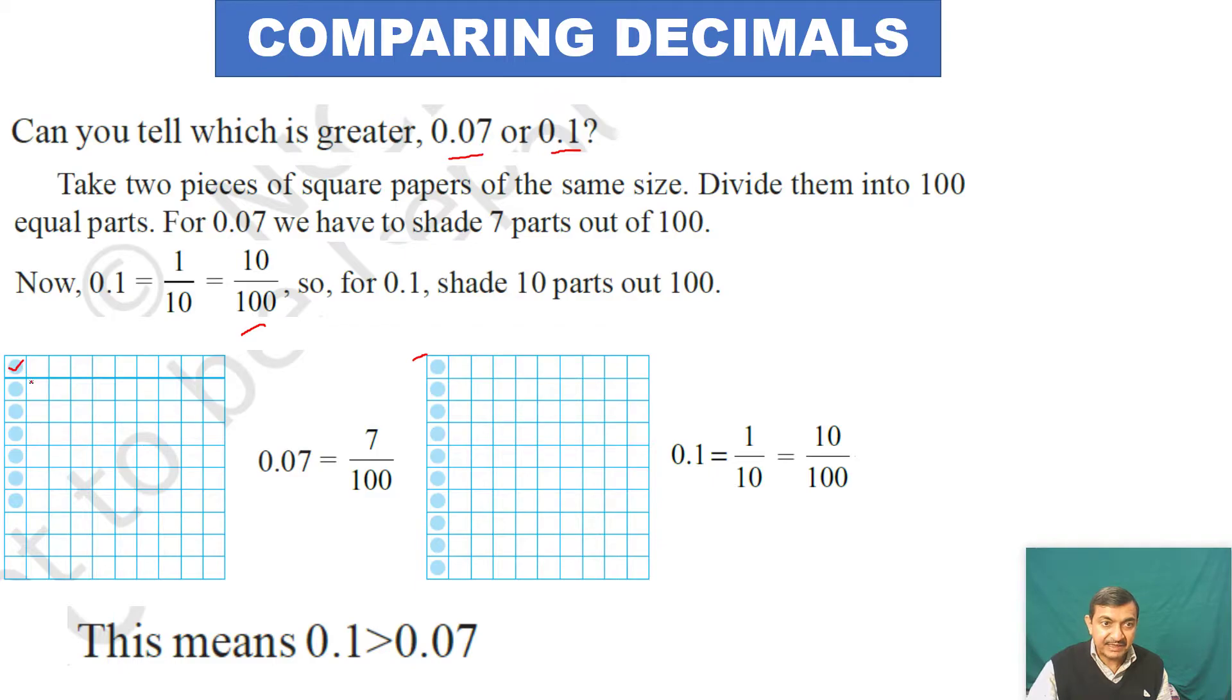Shade 3, 4, 5, 6, 7 - that's 7 parts complete. So 0.07 means 7 by 100. In decimal form it is 0.07, and in fraction form it is 7 upon 100.